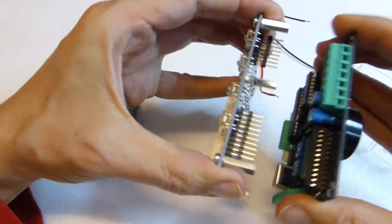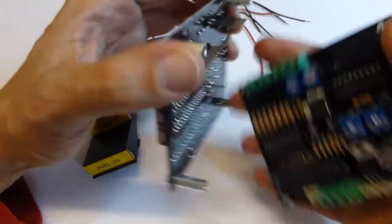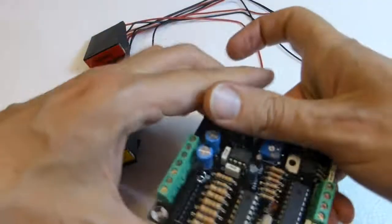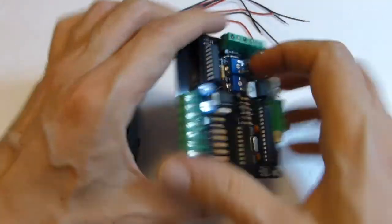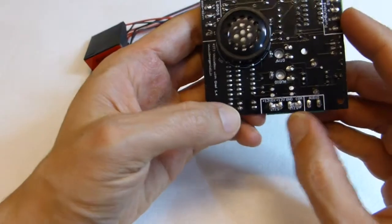Once you undo the four screws, this can gently be pulled apart. Pay attention not to bend these pins and you can access these two terminals.